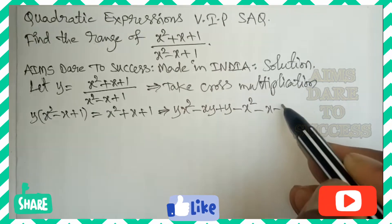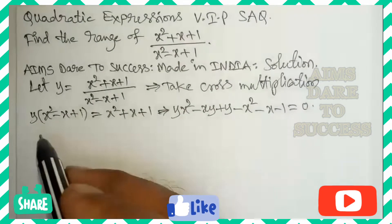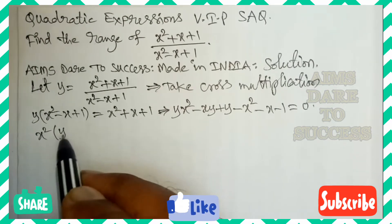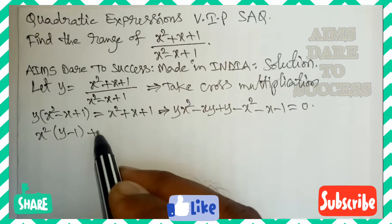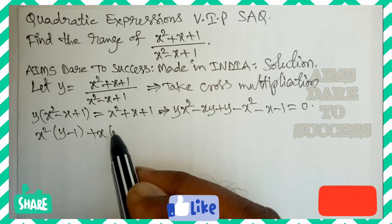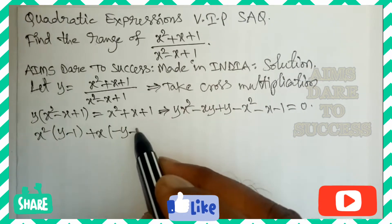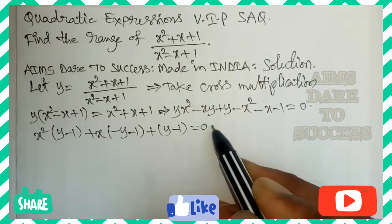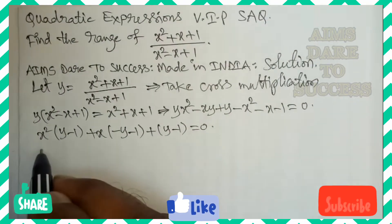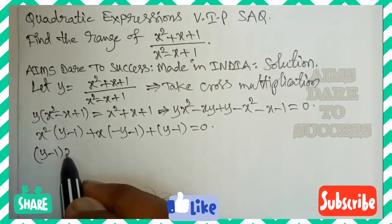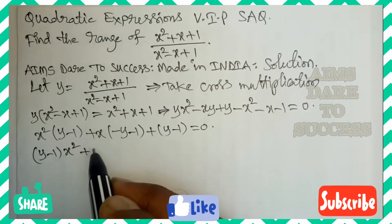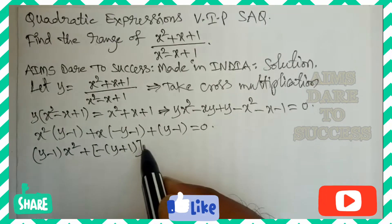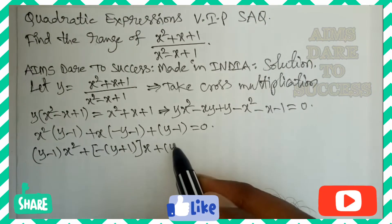Bringing all values to the left side: y·x² - x·y + y - x² - x - 1 = 0. Taking x² terms common we get (y - 1), taking x terms common we get -(y + 1), and the remaining constant is (y - 1). So: (y - 1)x² - (y + 1)x + (y - 1) = 0.